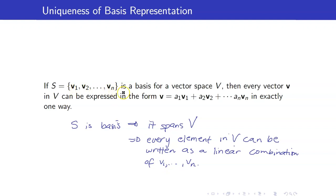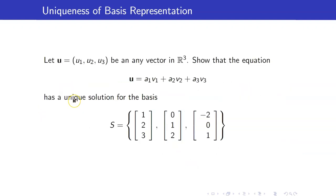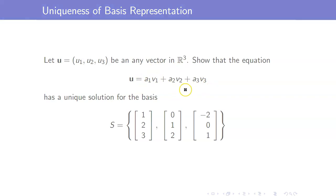However, if we know that it is a basis, then we can write V as a linear combination in exactly one way — there is no other way we can write it. To give an illustration, suppose that U is any vector in R3. U can be written as a linear combination of these vectors because they form a basis for R3. Let us show that there is always a unique solution for this vector equation.